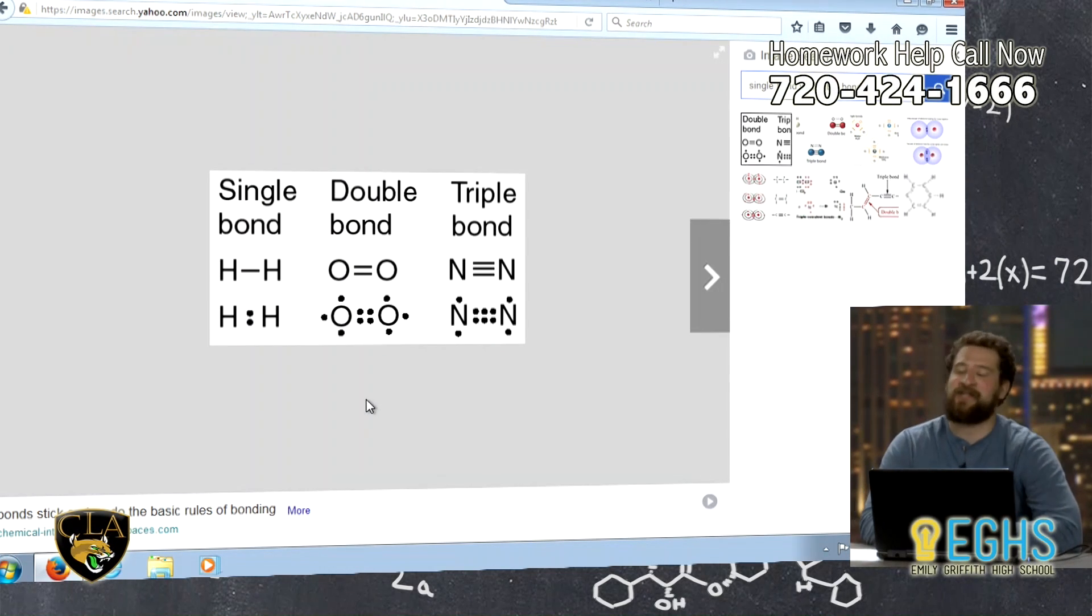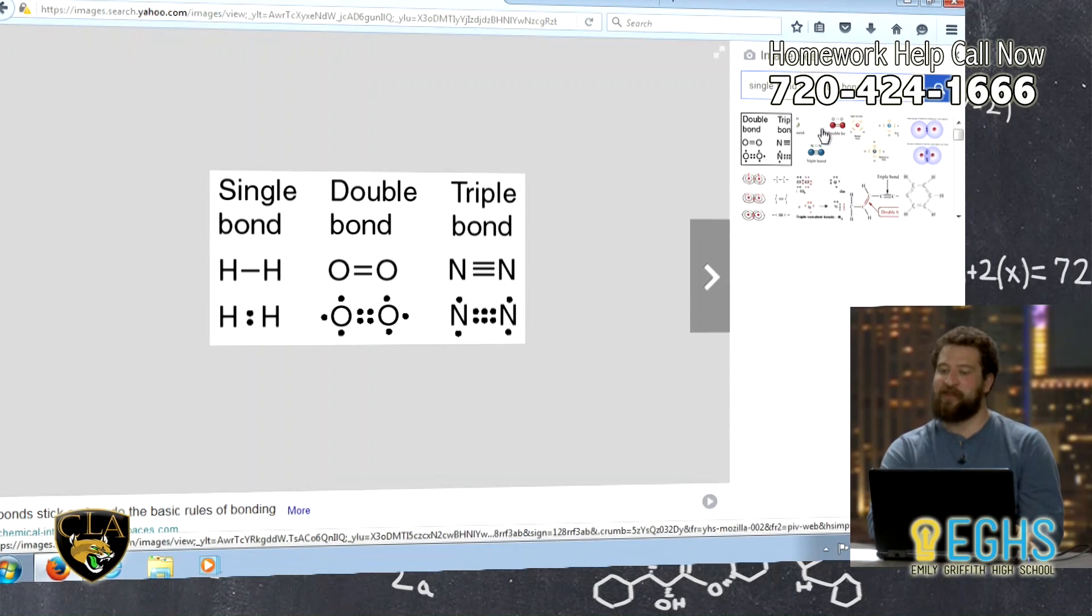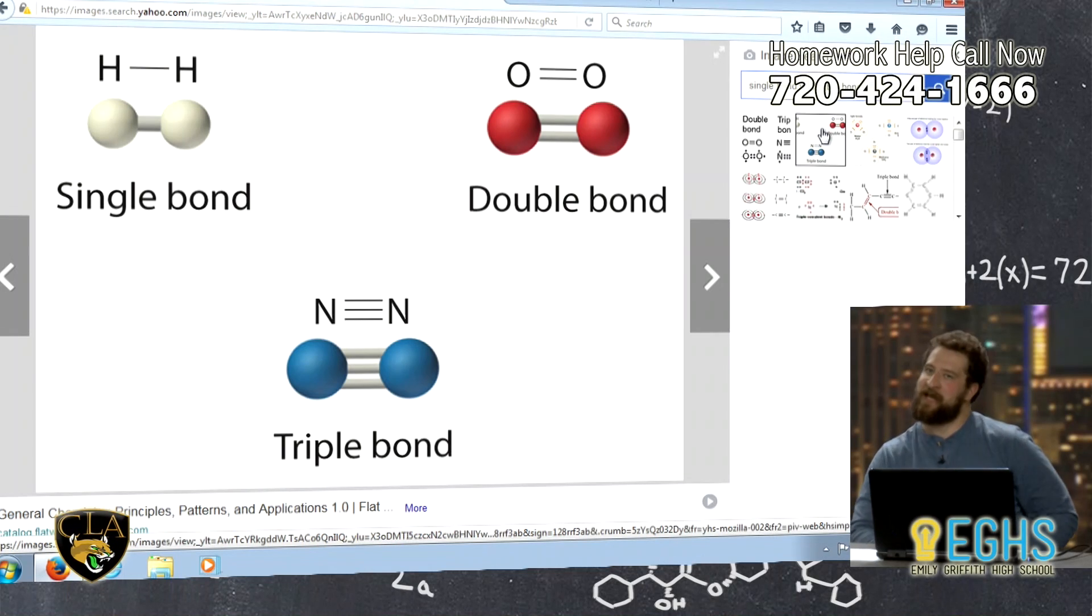And then you can just continue this onto a triple bond. A triple bond then is two atoms sharing three electrons each. So for six total, and nitrogen gas, N2 is a really classic example of that. And another way that these are sometimes represented is through images like this. Okay.